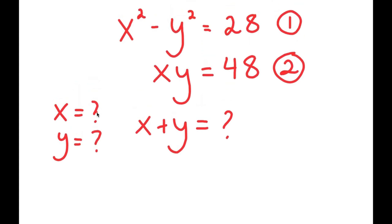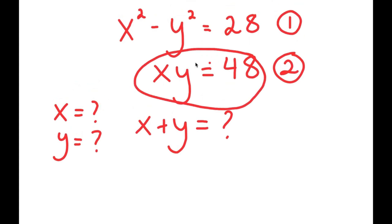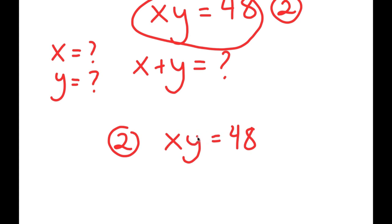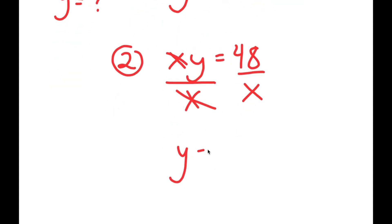To start, I'm going to use equation two: x times y equals 48. I'm going to solve for one variable in relation to the other — in this case, I'll solve for y. To isolate y, I divide both sides by x, so I get y is equal to 48 over x.